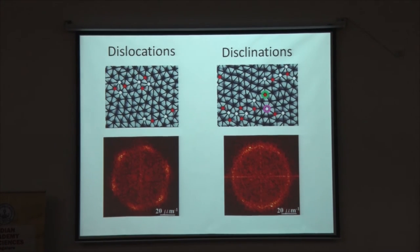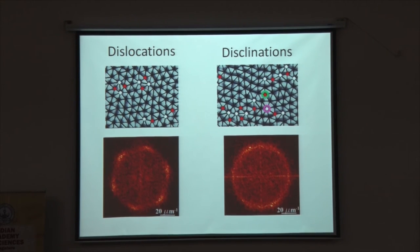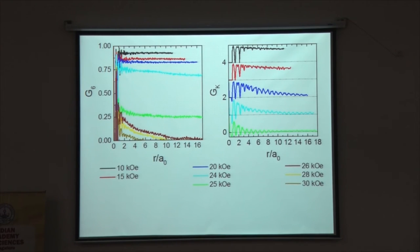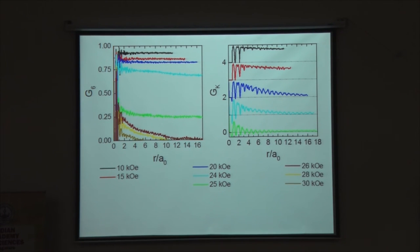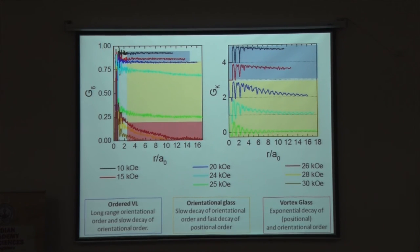This observation made us believe that we have actually here two phase transitions happening. One is when I have dislocations—that is destroying the positional order, but still in the Fourier transform, I can see that the orientational order is intact. And the second one is when I start getting disclinations, where the orientational order is also lost. This is very different from a conventional solid, which just melts through a first-order phase transition from an order to a disordered state. This intermediate state has unusual correlation functions, and this is what we call an orientational glass. This is not an ordered solid, not a completely disordered solid, but somewhere in between, which has orientational order but no long-range positional order.